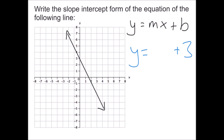For the slope, we find two points and count rise over run. Using the y-intercept of 3 and another point, we go up 2 and left 1. Up is positive for rise, so rise is 2. Left is negative for run, so run is negative 1. That gives a slope of 2 over negative 1, or negative 2. So we can simplify this to y equals negative 2x plus 3.